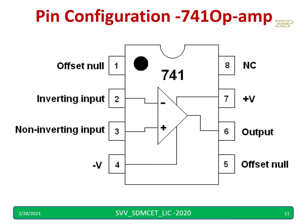Pin configuration — you have to remember. Pin number one is null, two is inverting, three is non-inverting, four is minus Vcc, seven is plus Vcc, six is the output, and five is the offset null.